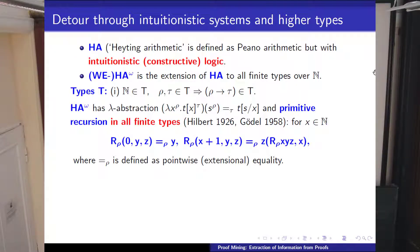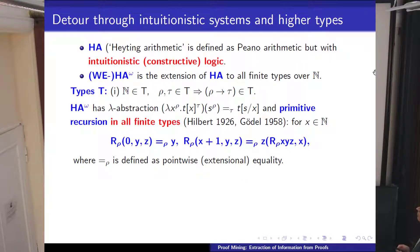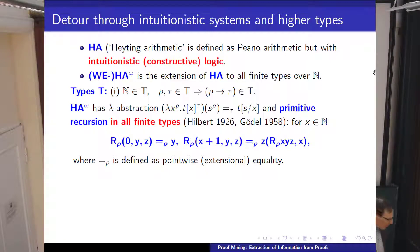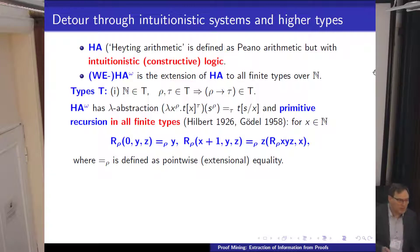Then we have Gödel's higher-type primitive recursive operators. The point here is that we have equality in higher types, which I treat as always extensionally defined. There's no discussion in Gödel about an intensional treatment and so on, but it's treated extensionally. The point is it's just ordinary primitive recursion, except that if, for example, rho is the type of functions from numbers to numbers, in each step you define not just a number but a whole function.